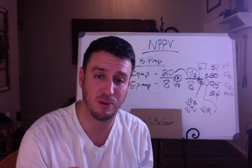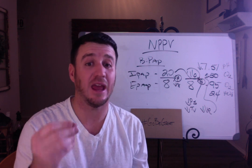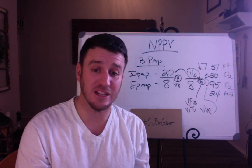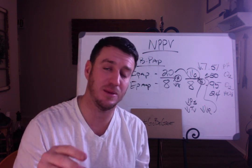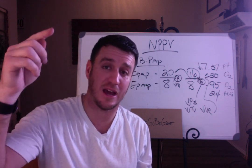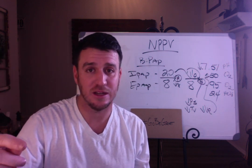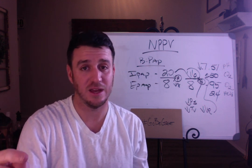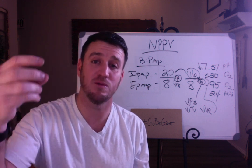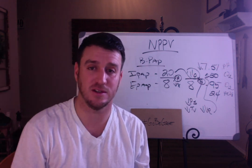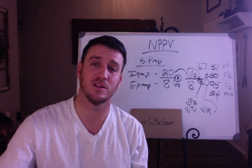Remember: if it's an oxygenation problem, change EPAP and keep your pressure support difference the same — so you may have to change both EPAP and IPAP. If it's a ventilation problem, increase your pressure support by increasing the difference between IPAP and EPAP — you may just need to increase IPAP. If you need to decrease minute ventilation, decrease IPAP. The key is that the relationship between IPAP and EPAP equals pressure support, and that's what's driving your CO2. Leave your questions and comments below — have a great night.